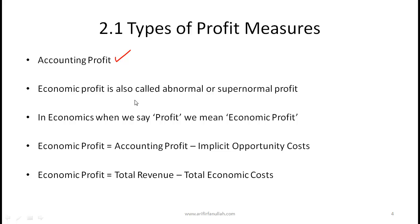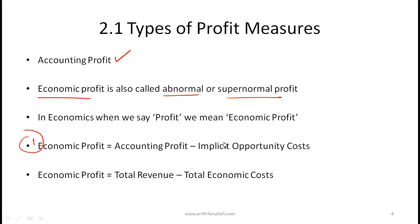Economic profit — also called abnormal profit or supernormal profit — is what we mean when we say profit in this topic. There are two definitions you must know: first, economic profit is your accounting profit minus any implicit opportunity costs; second, economic profit equals total revenue minus total economic costs.